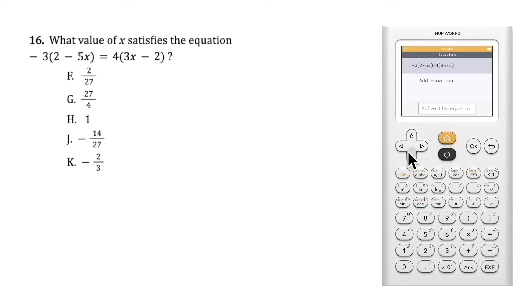Now that we've entered our equation, we can solve the equation to see our solution of x equals negative 2 thirds or option k.